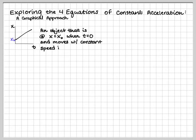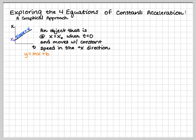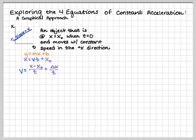Here's a position versus time graph representing a constant velocity. This object starts at position x₀, or x initial, when time is equal to 0, and moves with a constant speed in the positive x direction. This is linear — the slope represents the velocity. Since it's linear, we can model this in slope-intercept form y = mx + b. We take the labels on our axes and pop them in: position x instead of y, v for velocity instead of m, time on the x-axis, and the y-intercept is x₀, the initial x position.